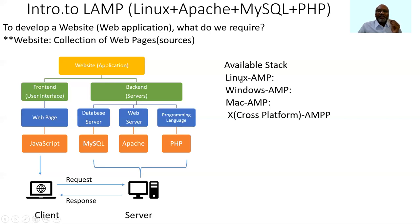L in LAMP stands for Linux. If you are hosting your web server — Apache — and your database server, MySQL, and using the programming language PHP (Hypertext Preprocessor) on a Windows operating system, we call that particular stack WAMP. Similarly, if you are running the web server, MySQL server, and the programming language on a Mac operating system, we call it MAMP. If you want to run your software stack — database server, web server, and programming languages — on a distributed computing environment or cross platforms, we call it XAMPP.